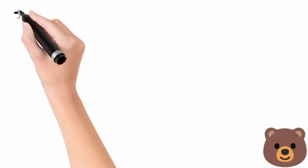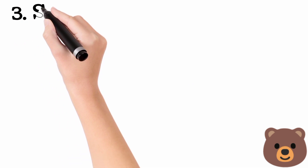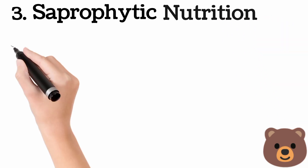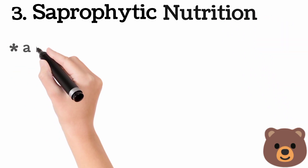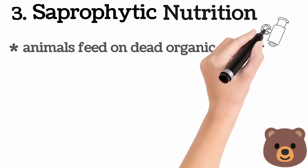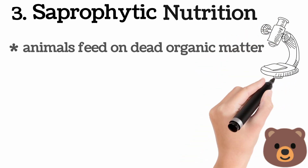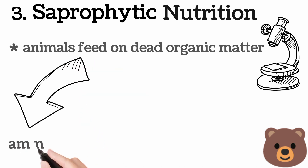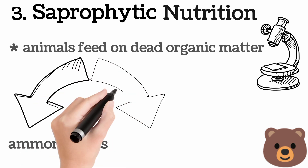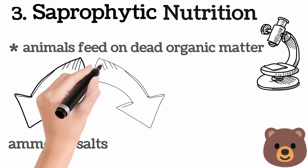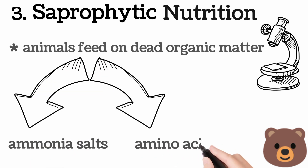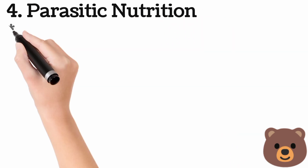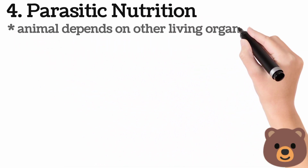Number three is saprophytic nutrition. Animals that feed on dead organic matter are called saprophytes. These protozoa feed on dead organic matter — they absorb ammonia salts and amino acids.